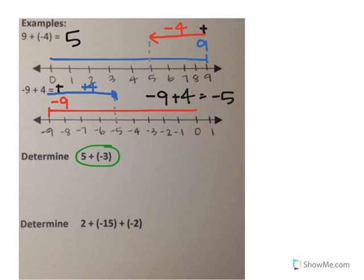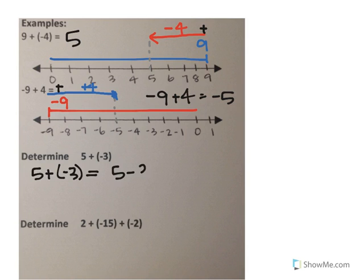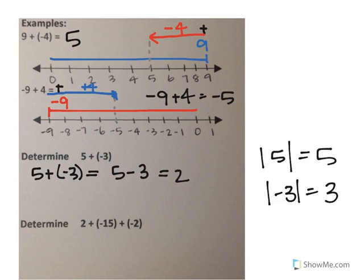Go ahead and determine positive 5 plus negative 3 on your own. You do not have to use a number line but you can if you'd like. Pause the video while you solve and then turn it back on to check your answer. Positive 5 plus negative 3 can be rewritten as 5 minus 3, because when you add two integers with different signs you subtract and keep the sign of the number with the larger absolute value. 5 minus 3 equals 2. The absolute value of 5 is 5 and the absolute value of negative 3 is 3. Since 5 has the greater absolute value and it's positive, our answer is positive 2.